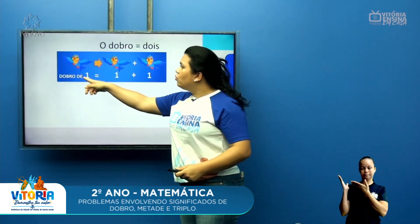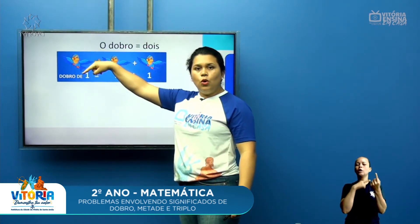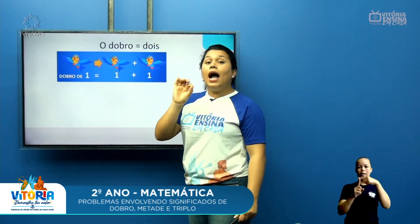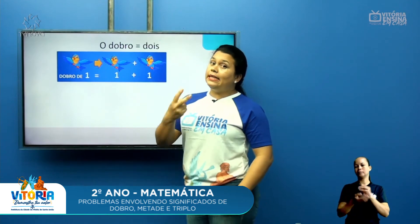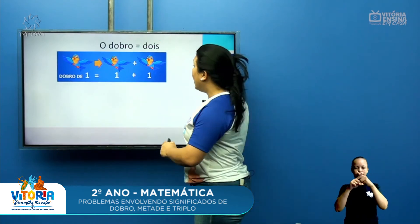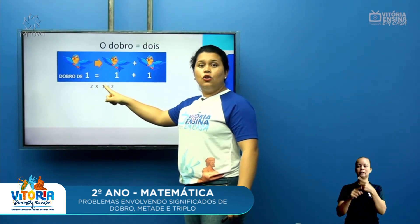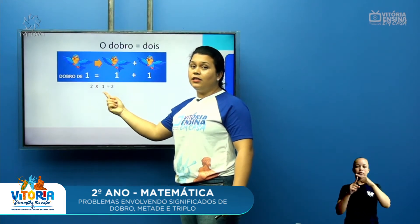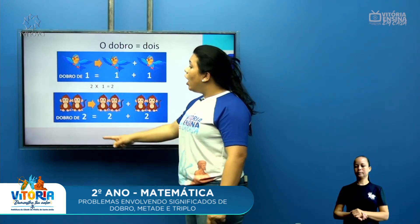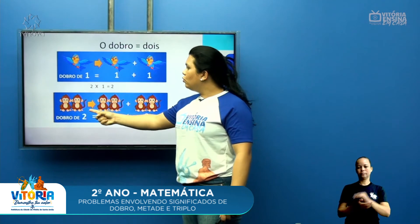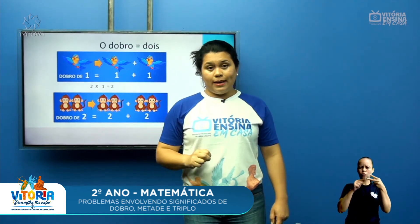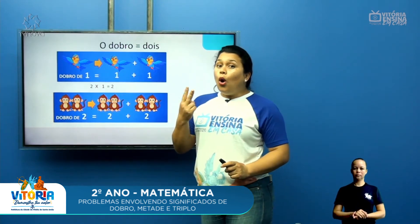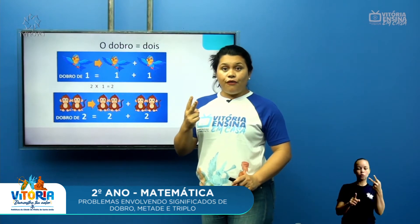O dobro de um: se eu tenho um, o dobro dele é ele mais ele mesmo, ou seja, um mais um. Na multiplicação, se é o dobro, então são duas vezes. Duas vezes um, que é um passarinho. O dobro de um passarinho é duas vezes um, que é dois. E agora, o dobro de dois: eu tenho dois macaquinhos. O dobro de dois macaquinhos é dois macaquinhos mais dois macaquinhos. O dobro de dois é duas vezes dois.